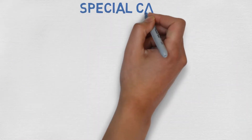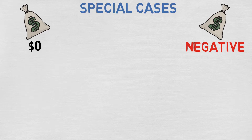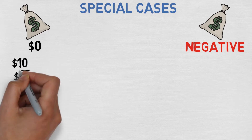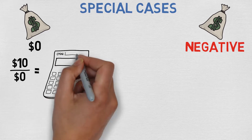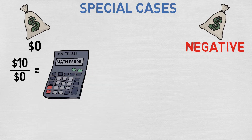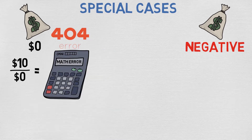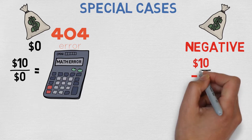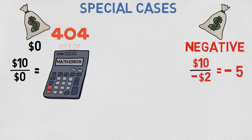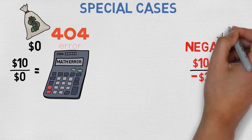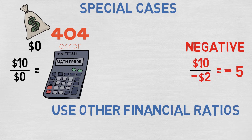There are also some special cases. What if the company's earnings are zero or negative? If the price of a share is $10 and earnings are zero, the PE ratio would be 10 divided by zero — which is not possible to calculate. If the company has negative earnings, the PE ratio is also negative; dividing 10 by minus 2 gives minus 5, which doesn't tell us anything useful except that the company is losing money. To analyze companies with zero or negative earnings, you must use other financial ratios.